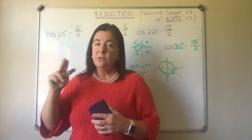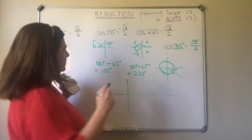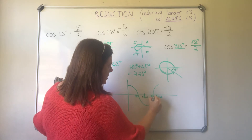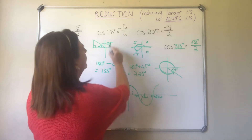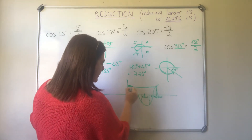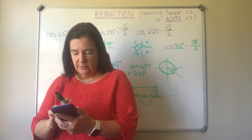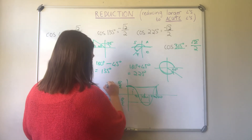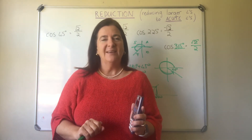Every single larger angle — obtuse, reflex, even bigger than complete revolutions — can always be reduced to a specific acute angle. It makes sense when tied up with the cosine graph. On the cosine curve: at 45°, 135°, 225°, and 315° the values are √2/2 or minus √2/2. √2 divided by 2 is approximately 0.707. So we're starting with reducing numerical degrees down into an acute angle.